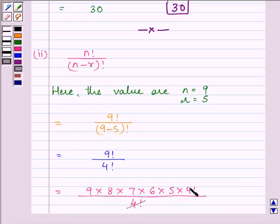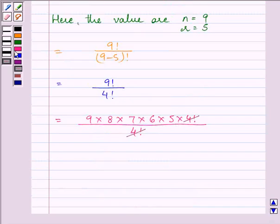On cancelling out 4 factorial from the numerator and the denominator and multiplying 9 with 8 with 7, 6 and 5,